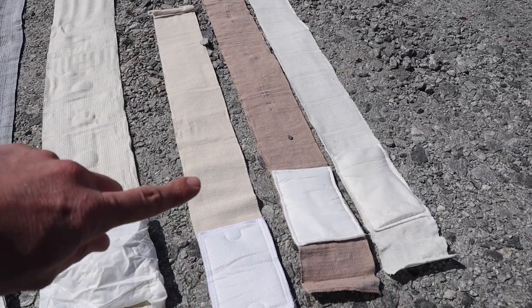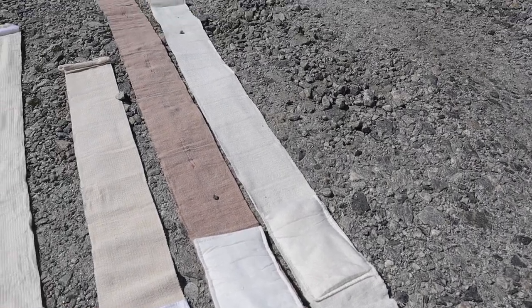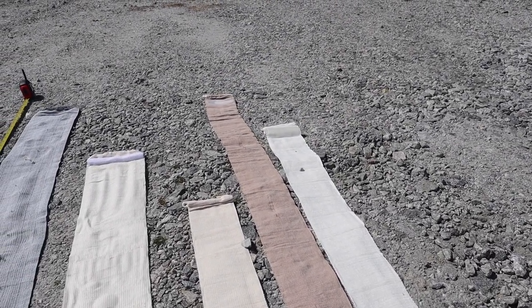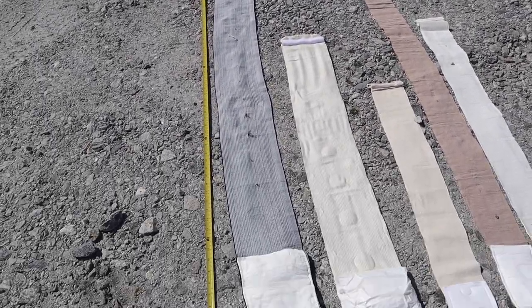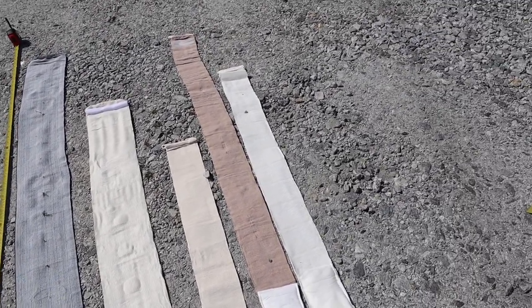This is the mini H one right here. This one over here, the tan one, is the NAR four inch flat fold. You can see it is almost the same length as the Israeli, but the NAR one is a four inch flat.